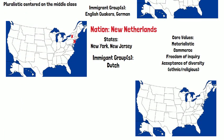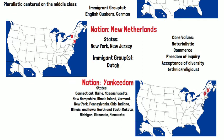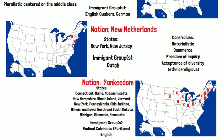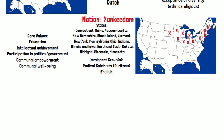The next nation identified by Woodard was Yankeedom. The immigrant groups included radical Calvinists or Puritans and the English. The states include Connecticut, Maine, Massachusetts, New Hampshire, Rhode Island, Vermont, New York, Pennsylvania, Ohio, Indiana, Illinois, Iowa, North and South Dakota, Michigan, Wisconsin, and Minnesota. The core values include education and intellectual achievement, participation in politics and government, communal empowerment, and a concern for communal well-being.